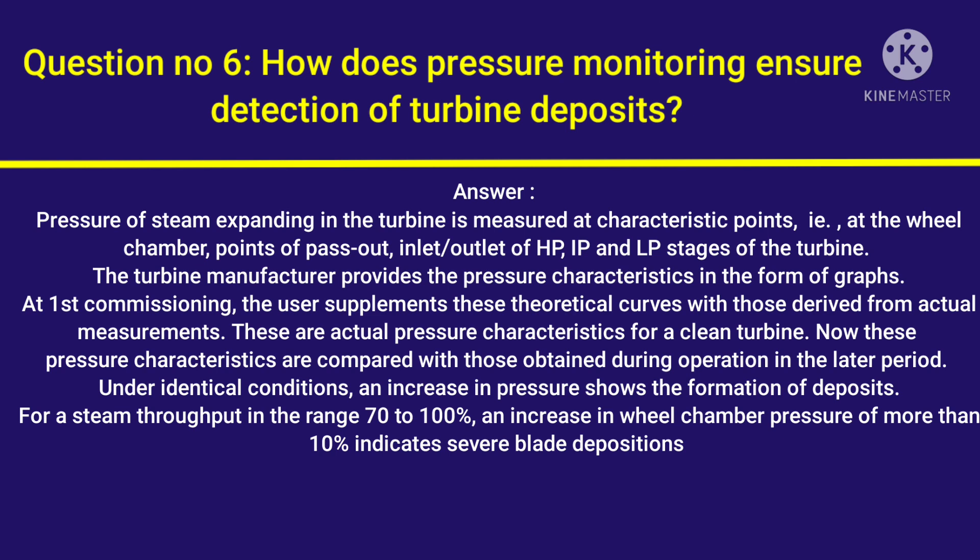The turbine manufacturer provides the pressure characteristics in the form of graphs. At first commissioning, the user supplements these theoretical curves with those derived from actual measurements. These are actual pressure characteristics for a clean turbine. These pressure characteristics are then compared with those obtained during operation in the later period.